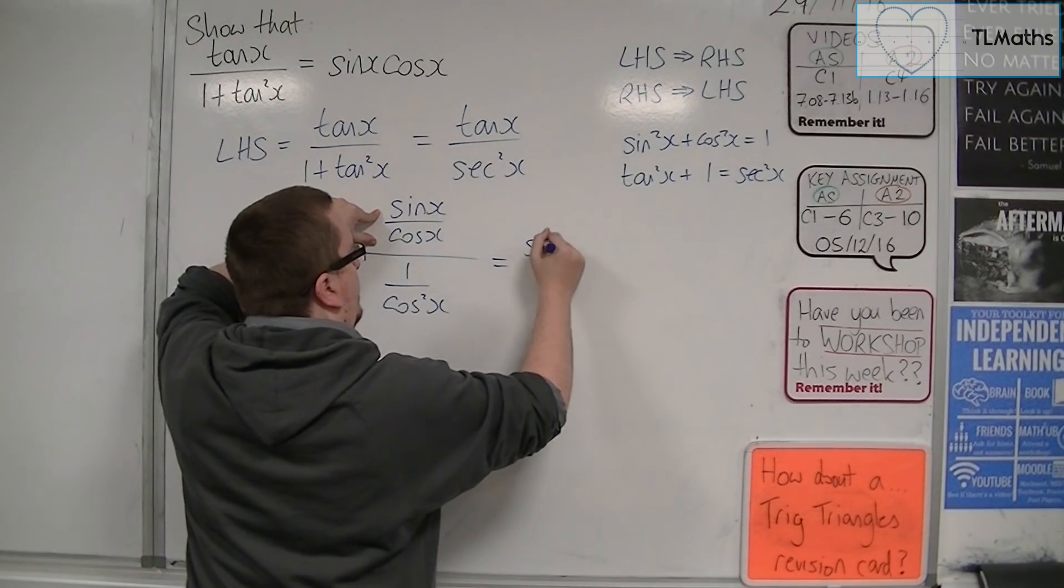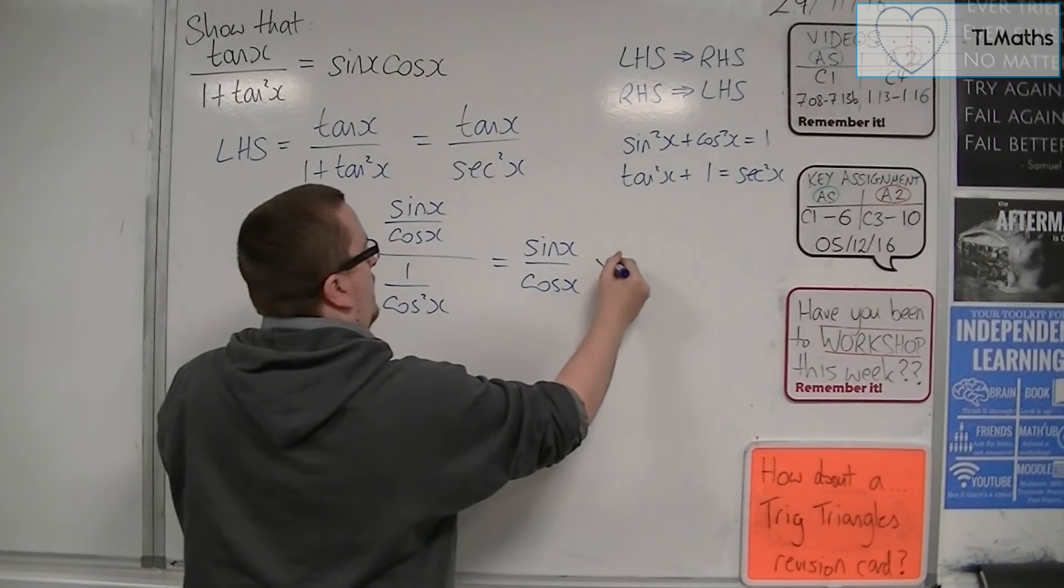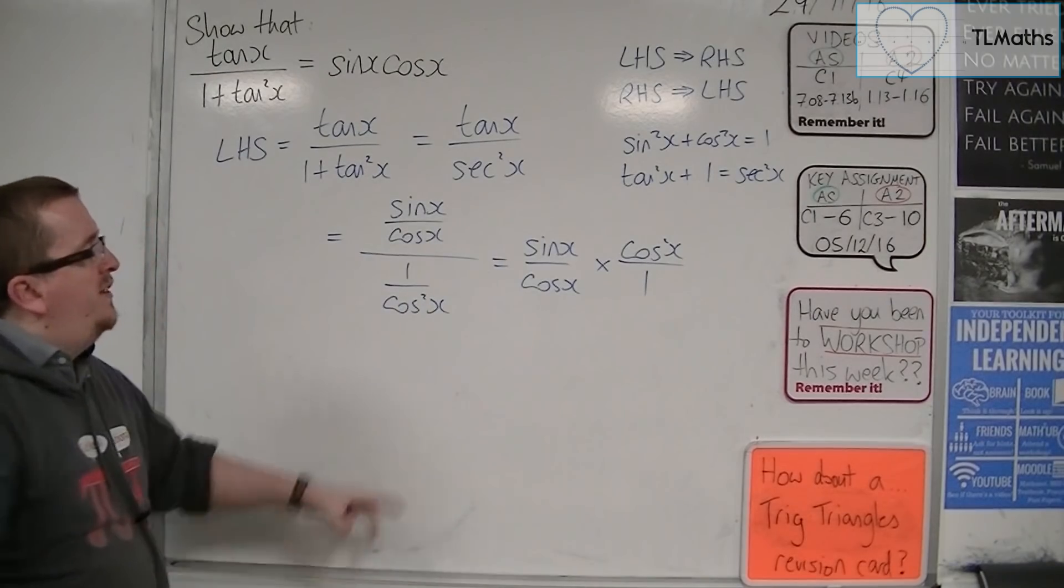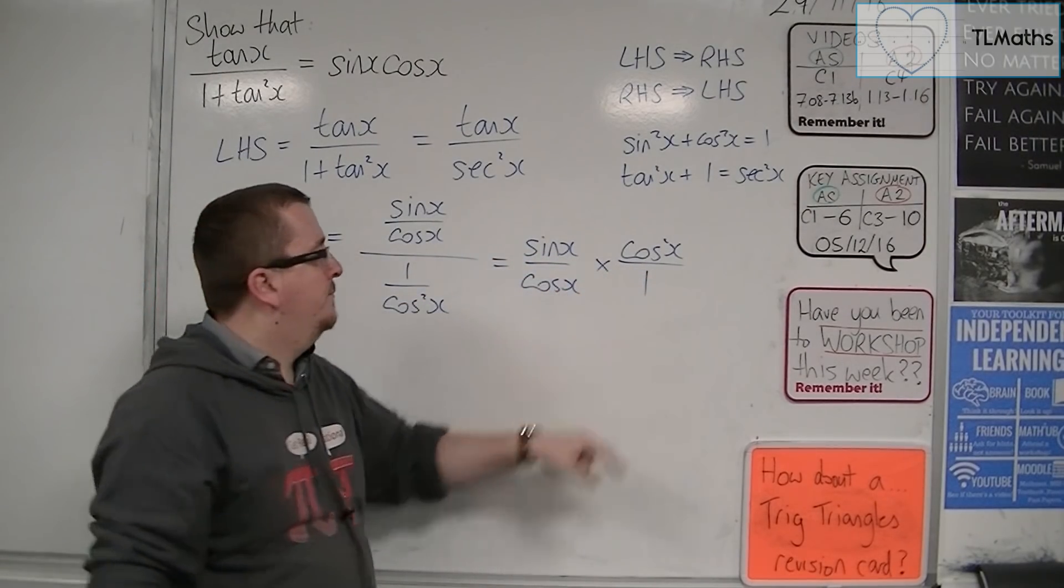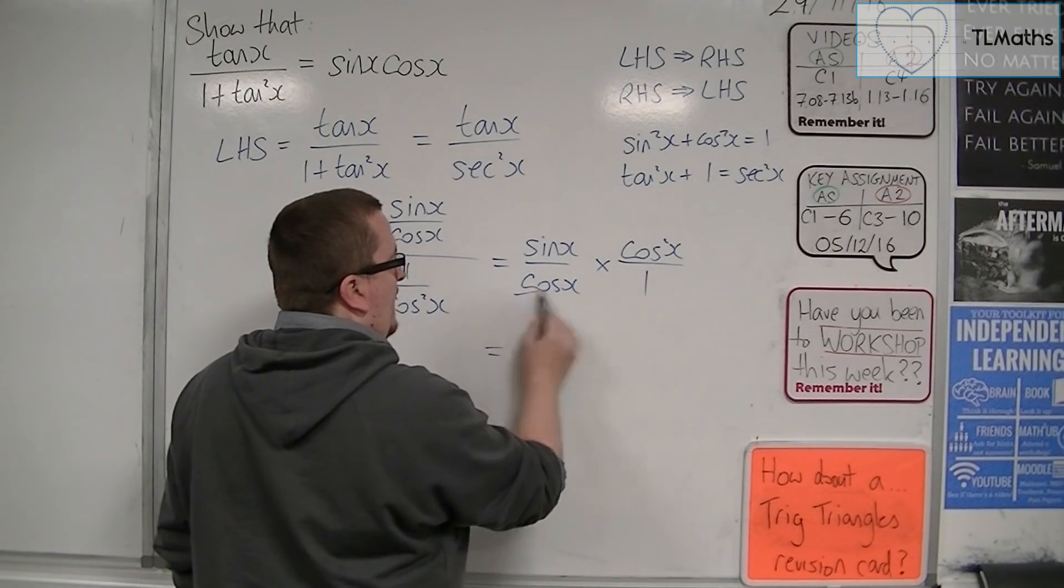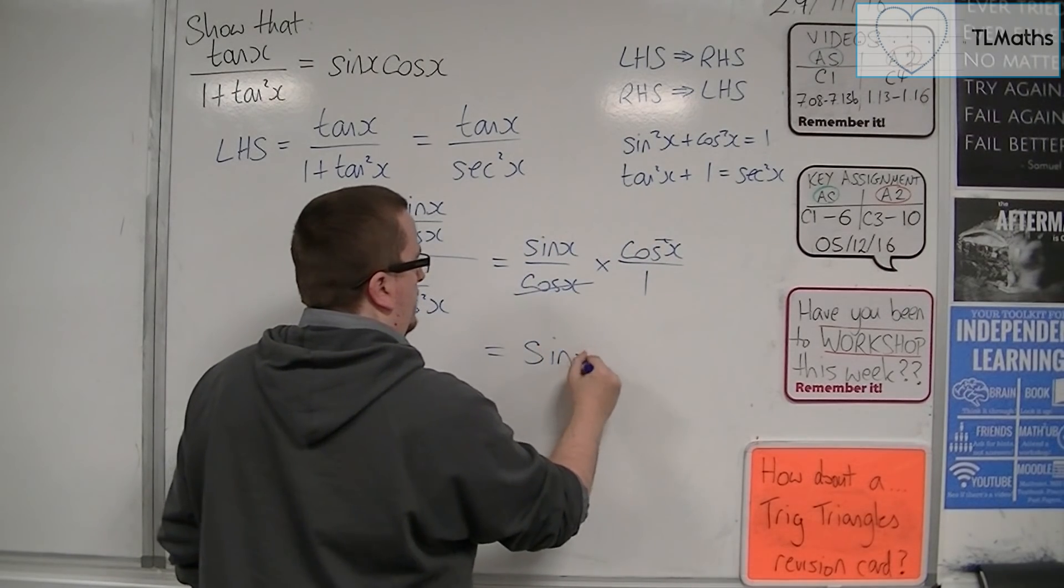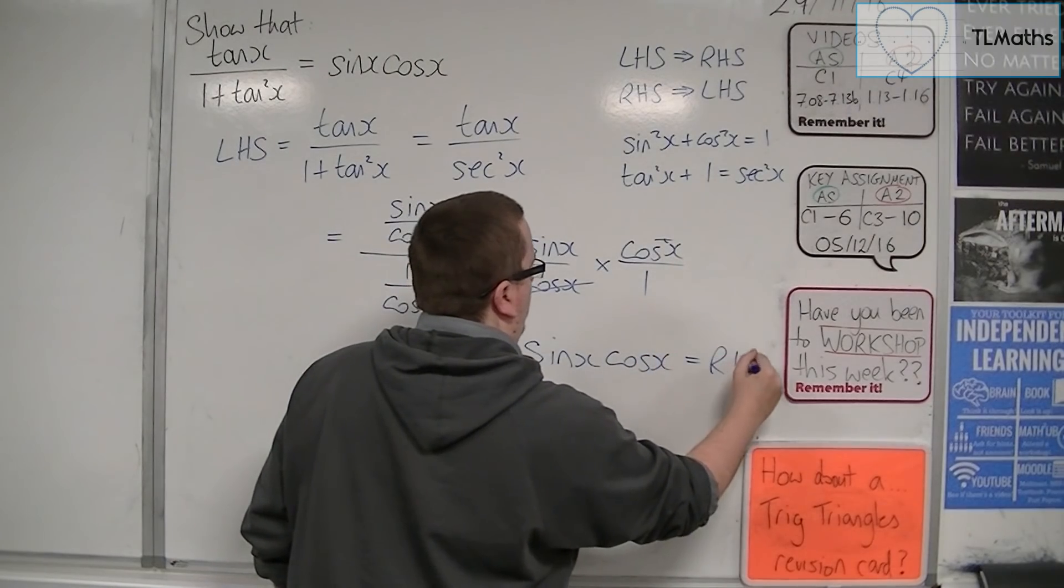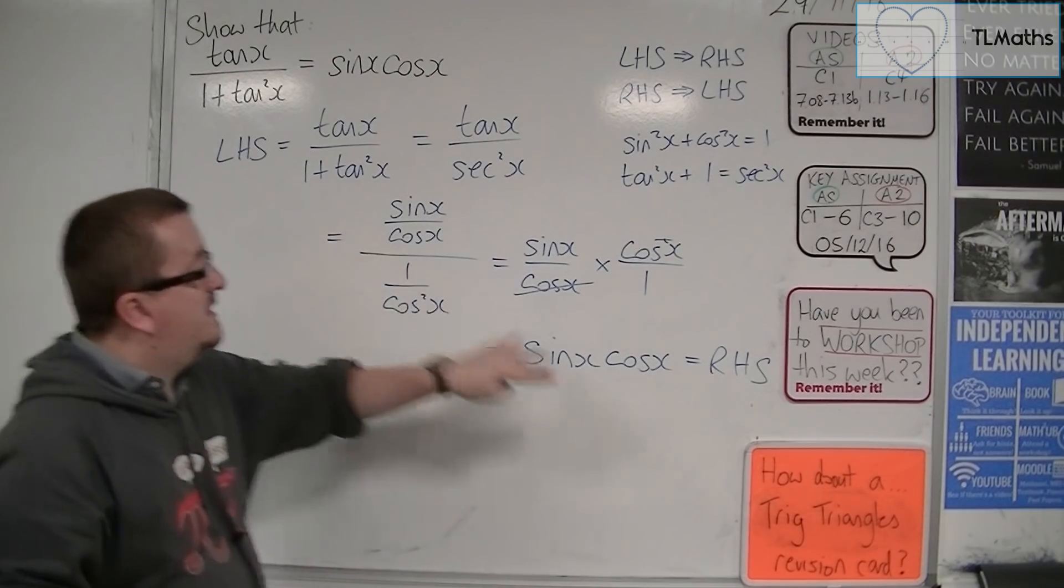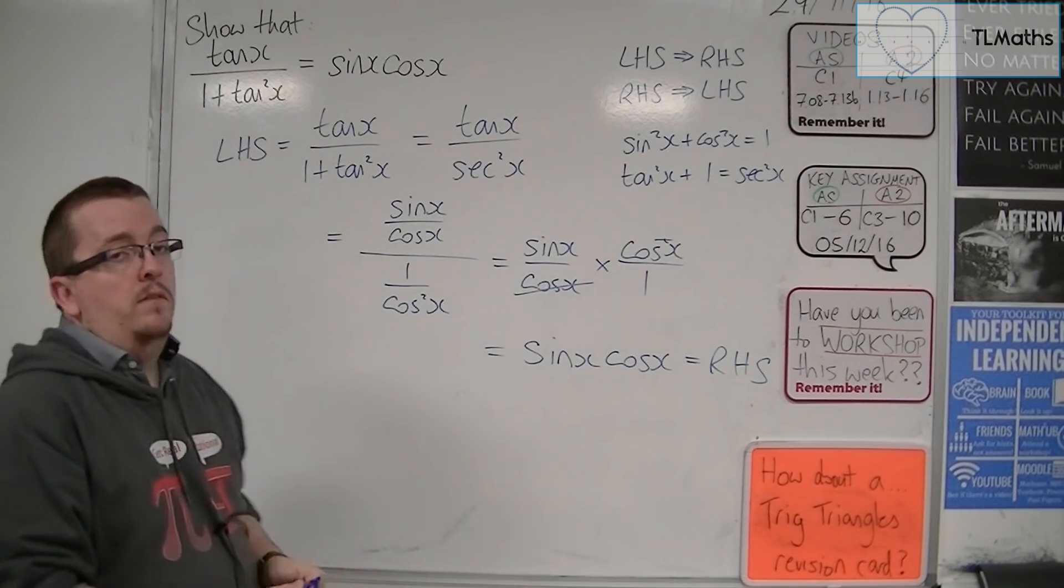Now, I've got the numerator here divided by a fraction. So, that's the same as multiplying by the reciprocal. So, dividing by 1 over cos squared is the same as multiplying by cos squared over 1. Now, we're going to get a cos x there and a cos x there cancelling, leaving me with sin x times cos x. And that's the right-hand side. And so, that has shown that the left-hand side is the same as the right-hand side, and so the original statement is true.